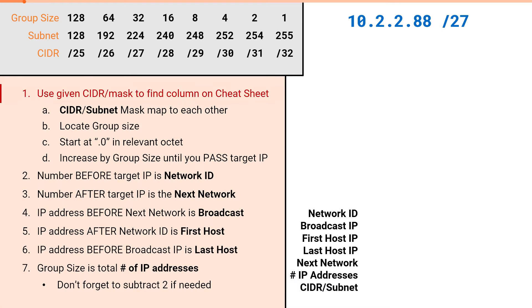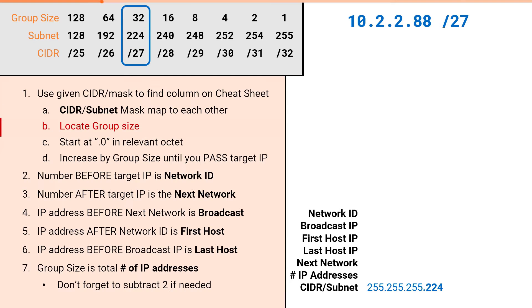Our first problem provides a CIDR of slash 27, which puts us in this column. The subnet row in our column lists 224, which means our subnet mask is 255.255.255.224. Then we will locate our group size. For a slash 27, the group size is 32. We will start at .0 and continue incrementing by 32 until we pass the target IP.